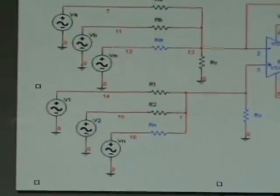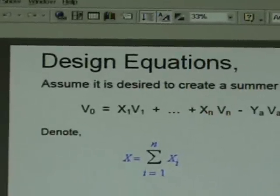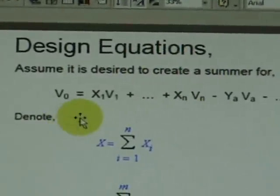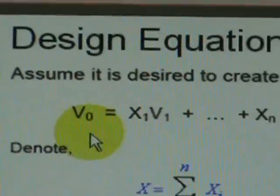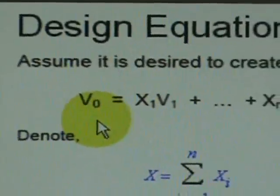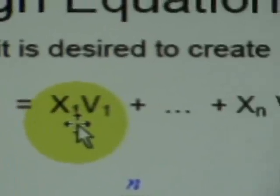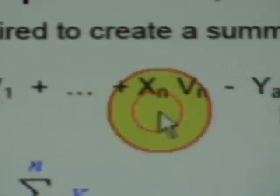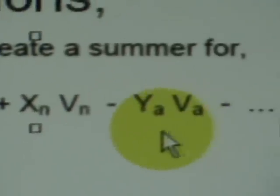So using the generic notation, Burbanic developed a design summary. Supposing there is a need to generate an output voltage V sub 0 that has a series of positive weighted signals and a series of negative weighted signals.